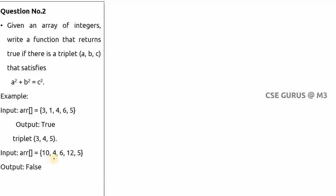Consider another example: {10, 4, 6, 12, 5}. There is no triplet here — the sum of squares of any two integers does not equal the square of another integer — so the output is false. Now take an array of seven elements: {3, 1, 8, 5, 6, 4, 10}.